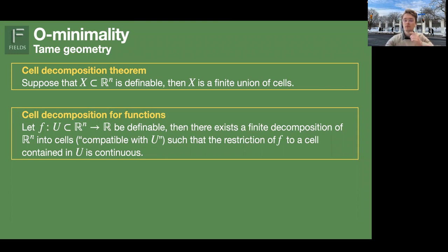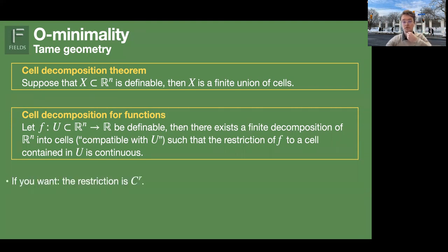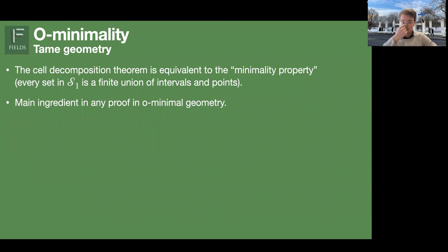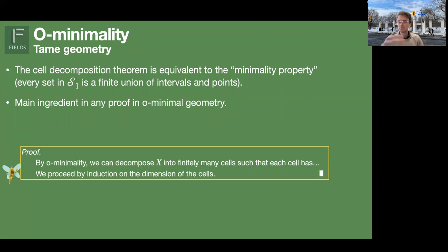It also works for functions: if you have a definable function, you can decompose R^n or its domain into cells such that the restriction to each cell is continuous — and you can ask for C^r as well. It's important to notice that we have only imposed a small axiom on the definable sets of the line, and apparently these are strong consequences for sets in any dimension. This cell decomposition theorem is the main ingredient of proofs in O-minimality: if you want a definable property like continuity, you use cell decomposition and usually your property is then satisfied on each cell.